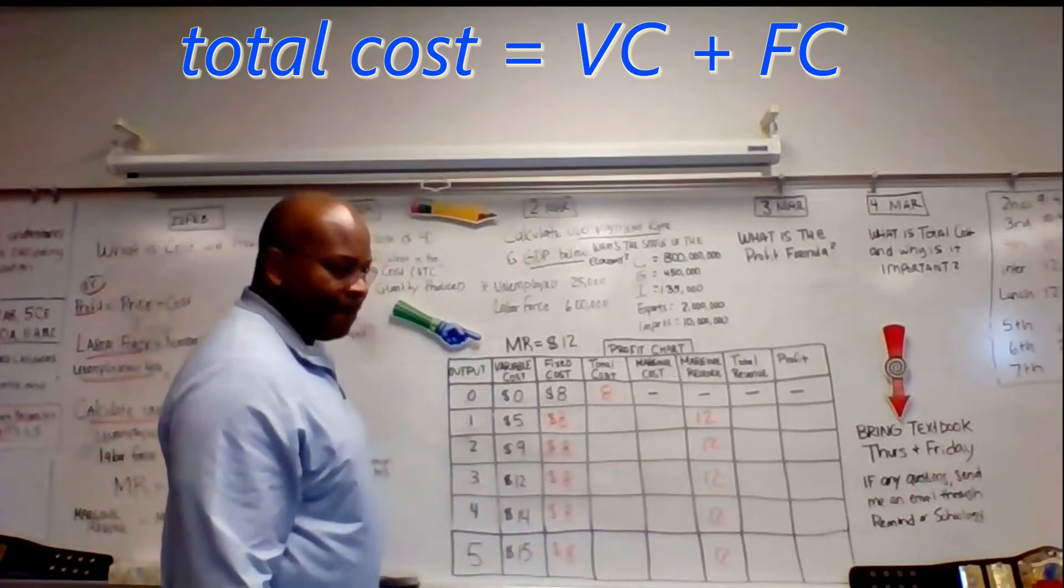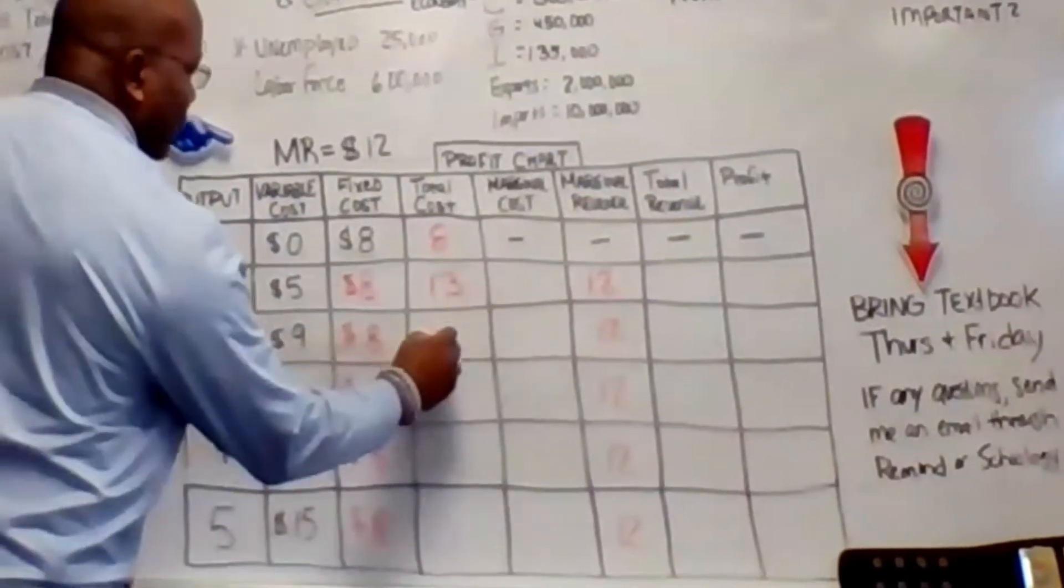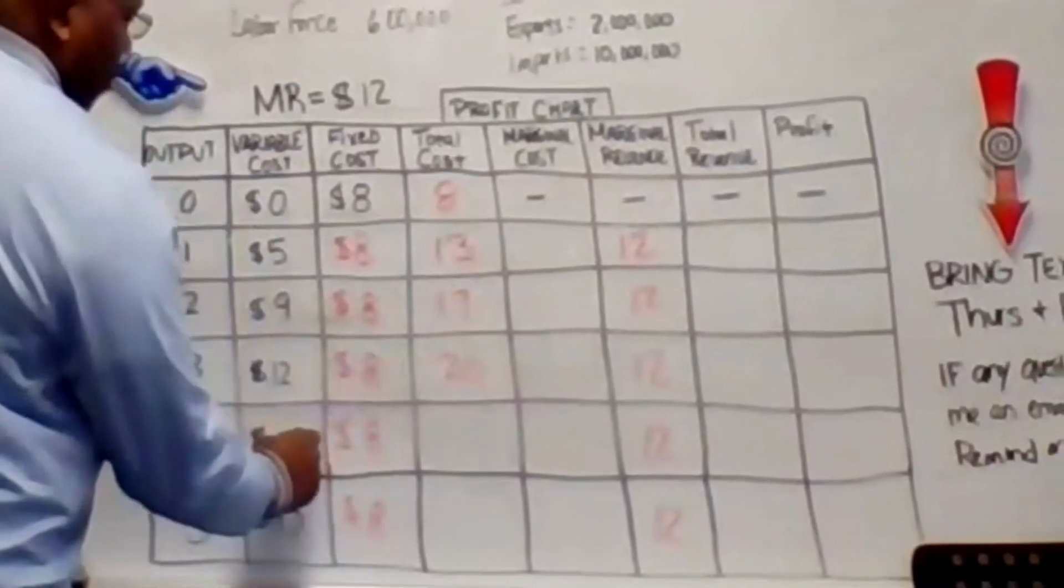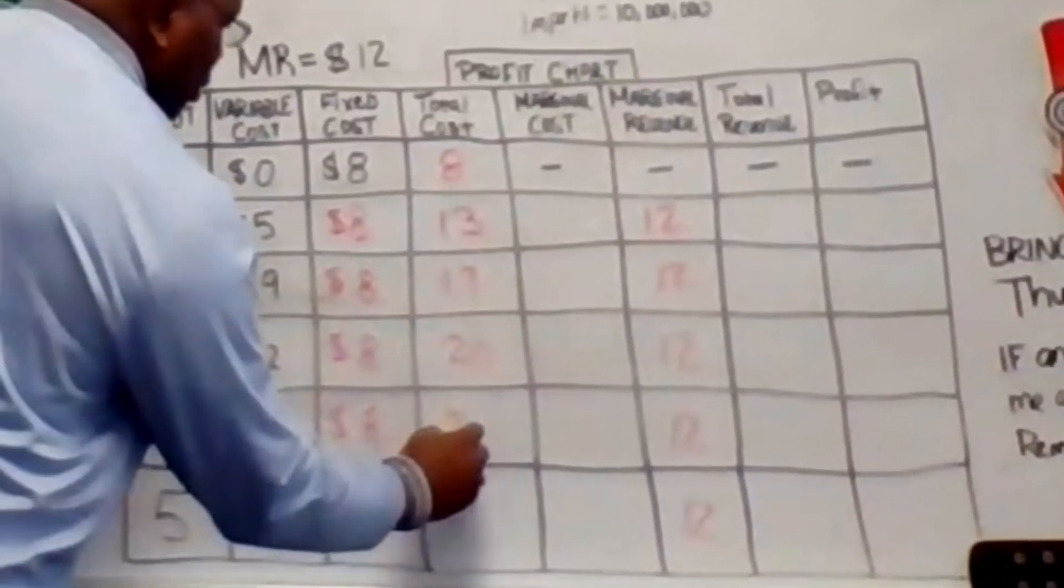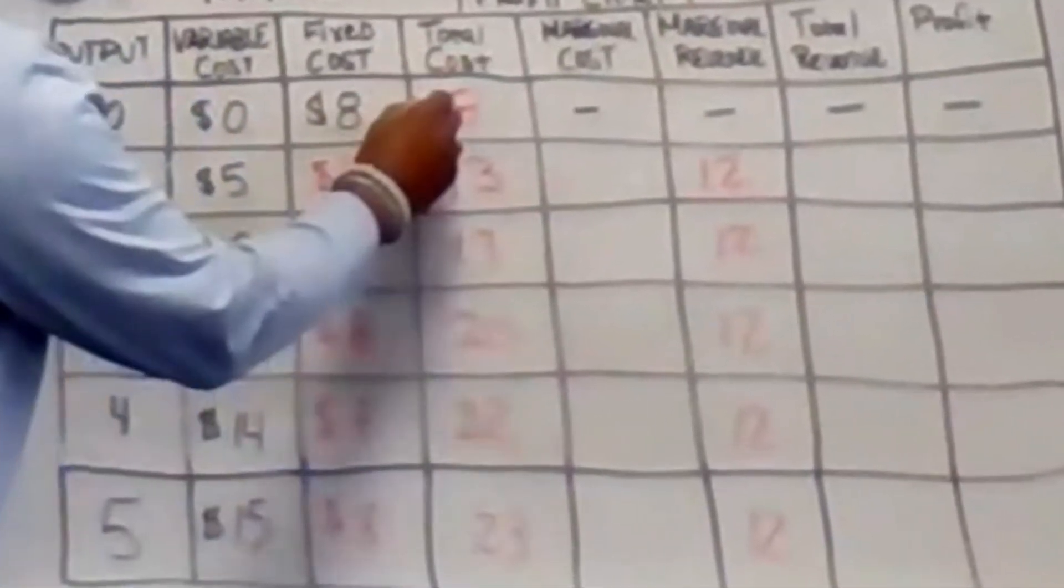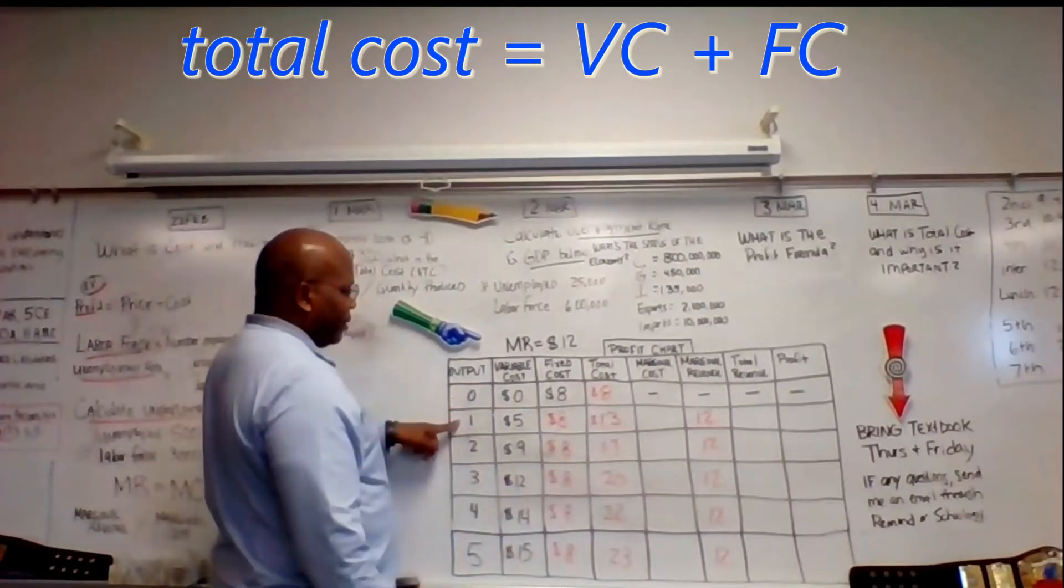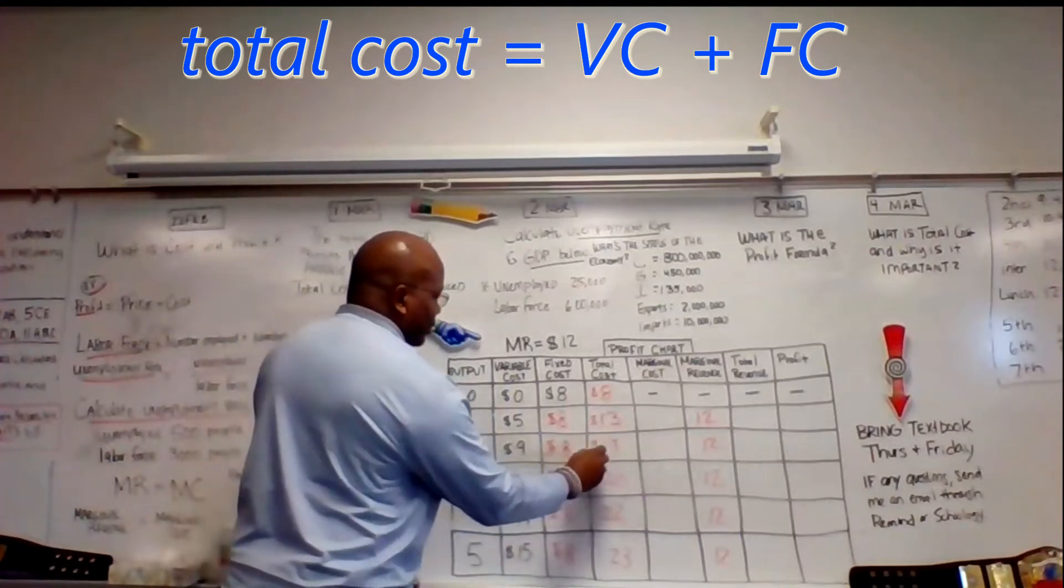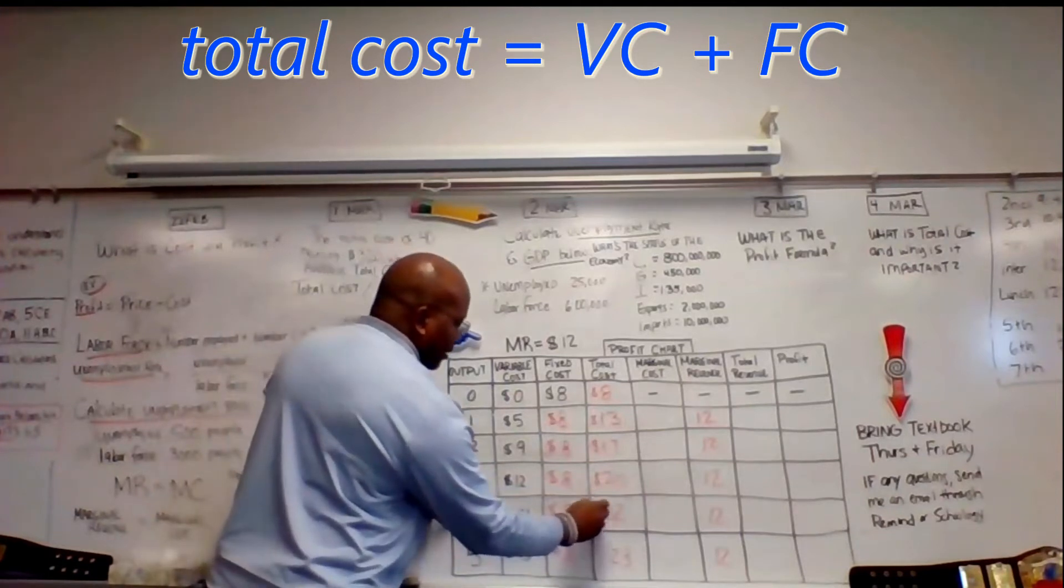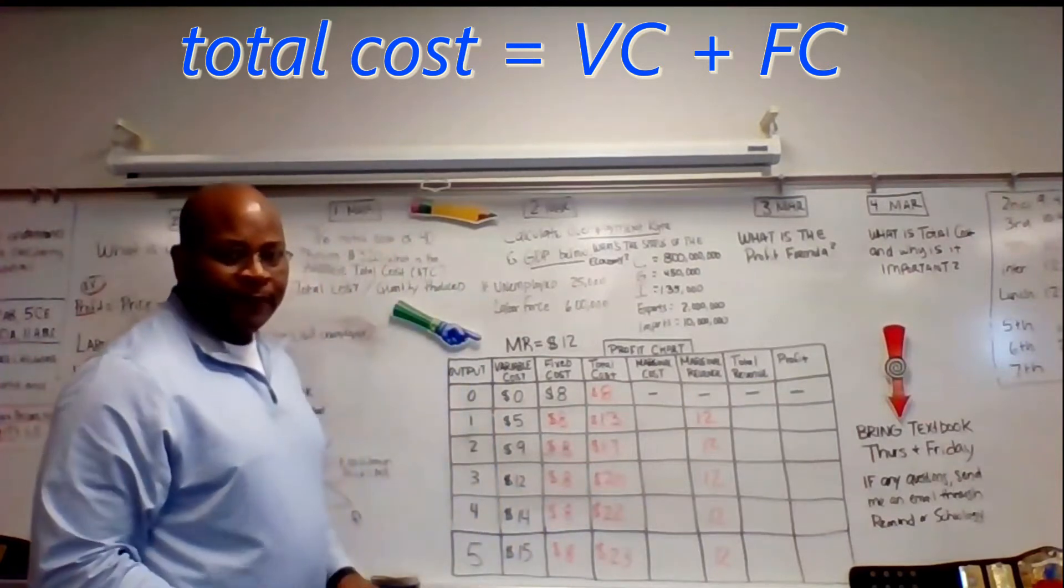Here's eight. Five plus eight, 13, nine plus eight, 17, 12 plus eight, that's 20, 14 plus eight, 22, 15 plus eight, 23 dollars. Here's our total cost for producing nothing. We're producing one output, two output is $17, three output is $20, four products, $22, five products, $23, and so on.